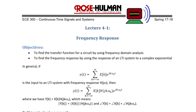In general, if x(t) equals the summation from k equals negative infinity to infinity of x(k) times e to the jkω₀t, and this is the input to an LTI system with frequency response h(jω), then y(t), the output, is equal to the summation from k equals negative infinity to infinity of x(k) times h(jkω₀t) times e to the jkω₀t. Here y(k) equals x(k) times h(jkω₀), which means the magnitude of y(k) is the magnitude of x(k) times the magnitude of h(jkω₀), and the phase angle of y(k) is the phase angle of x(k) plus the angle of h(jkω₀).